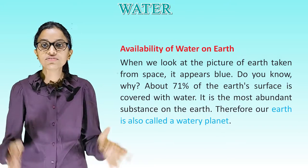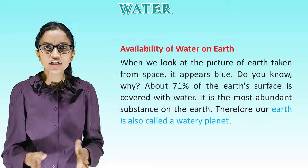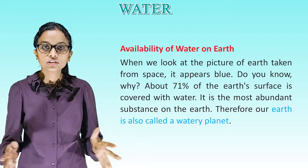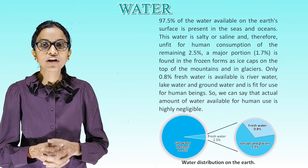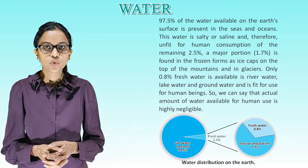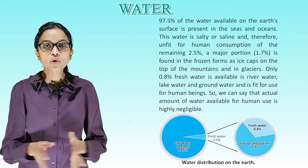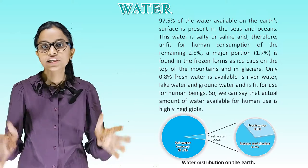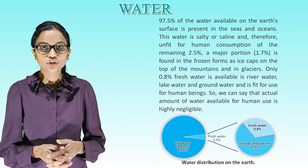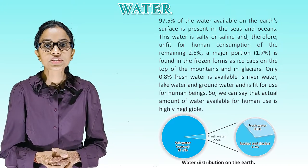Availability of water on Earth. When we look at the picture of Earth taken from space, it appears blue. Do you know why? About 71 percent of Earth's surface is covered with water — it is the most abundant substance on the Earth. Therefore, our Earth is called a watery planet. 97.5% of the water available on Earth's surface is present in the seas and oceans; this water is salty or saline and therefore unfit for human consumption. Of the remaining 2.5 percent, a major portion — 1.7 percent — is found in frozen forms as ice caps on mountain tops and in glaciers. Only 0.8 percent of fresh water, available as river water, lake water and groundwater, is fit for use by human beings. So we can say that the actual amount of water available for human use is highly negligible.